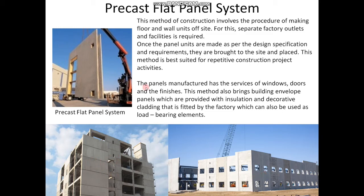The panels manufactured include services such as windows, doors, and finishes. This method also brings building envelope panels which are provided with insulation and decorative cladding fitted by the factory, which can also be used as load-bearing elements. From these pictures, you can see that all the building units are placed together using cranes.